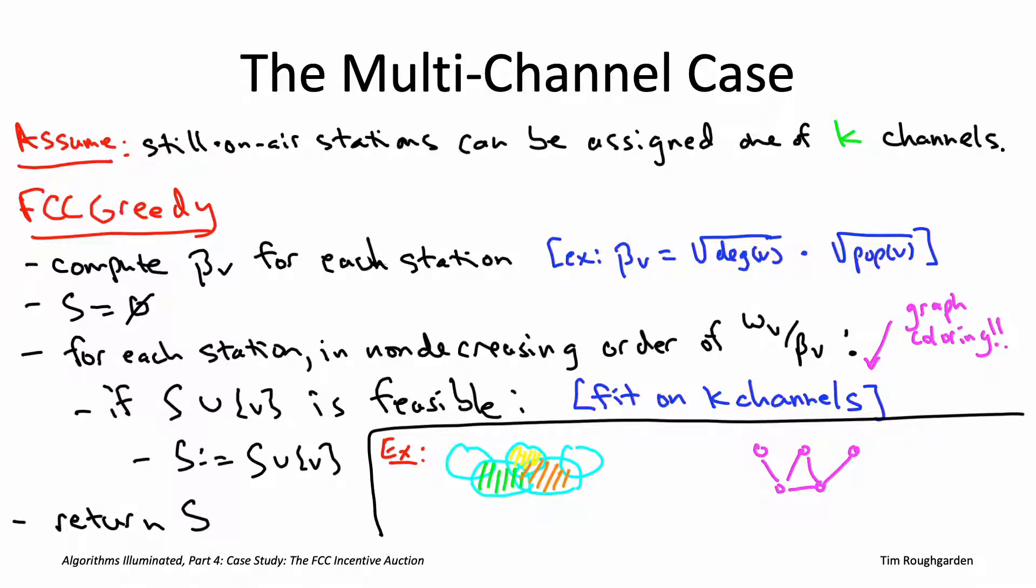So those three channels suffice to put those three middle stations on the air and then it's easy to pack the other two stations on the air as well. We just have to give the left station some color other than green, the right station some color other than orange. For example, we could assign both of them to the yellow channel.